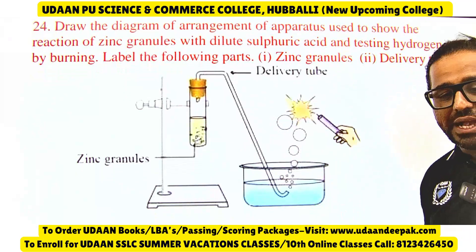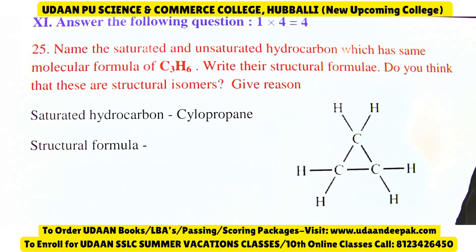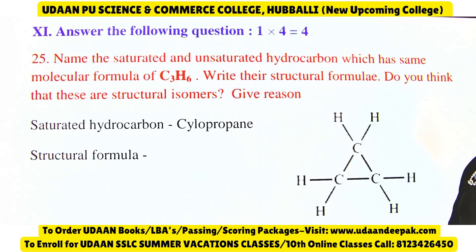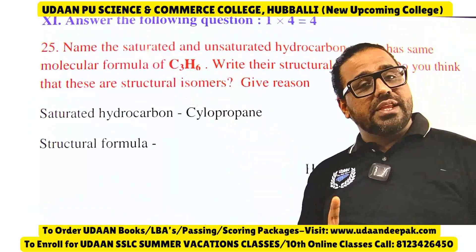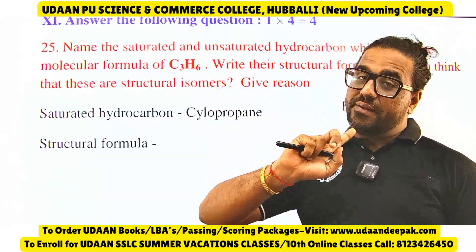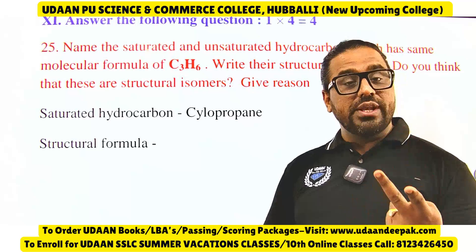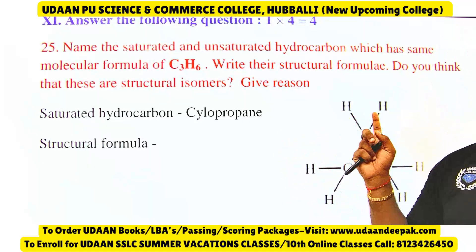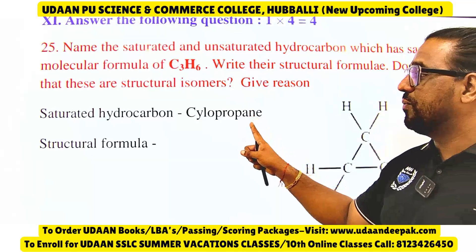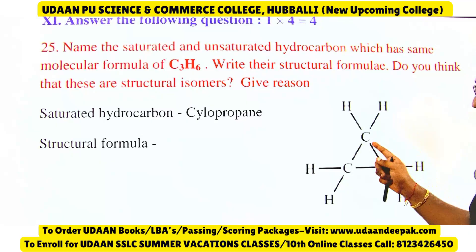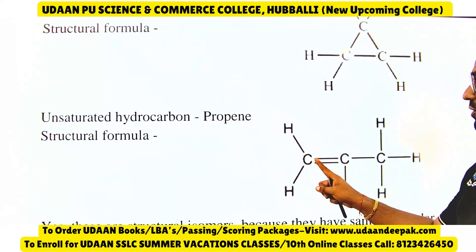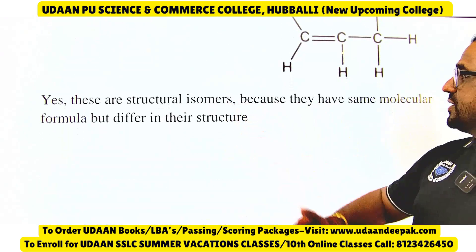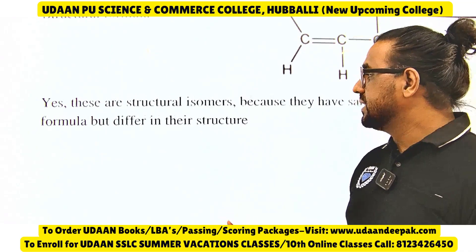A saturated and an unsaturated hydrocarbon have the same molecular formula C3H6. The saturated hydrocarbon is cyclopropane — it has single bonds only. The unsaturated hydrocarbon with C3H6 is propene — three carbons with one double bond between carbon atoms. These are structural isomers because they have the same molecular formula but different structural formulas.